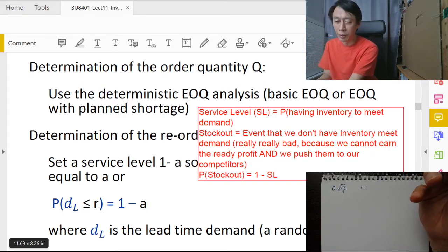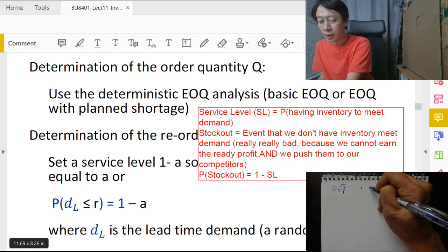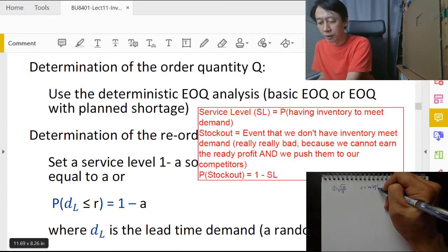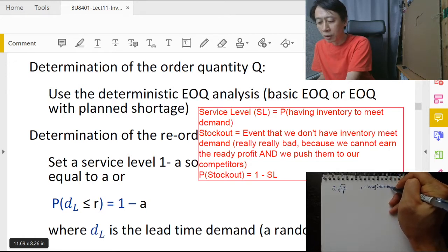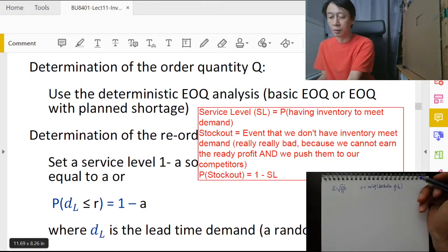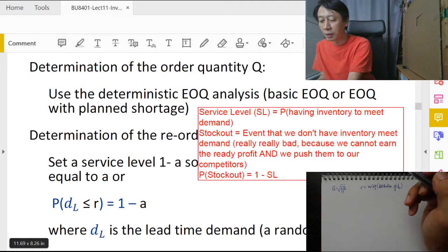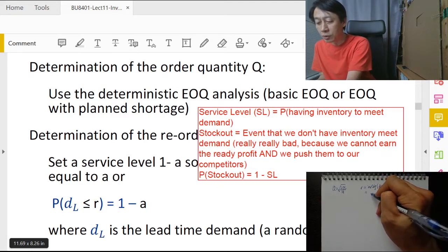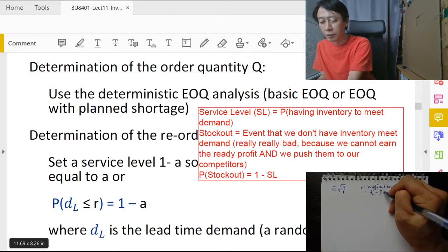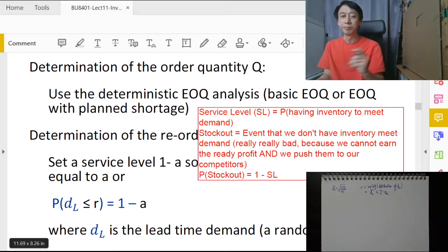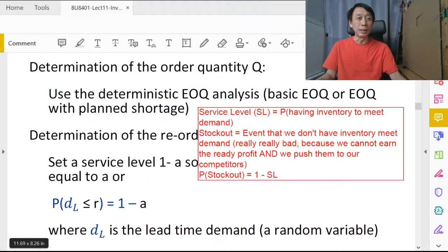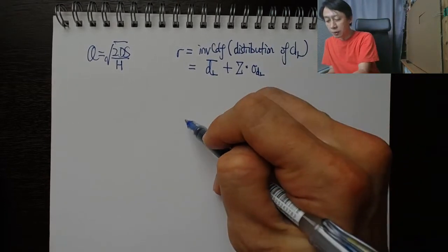So the most general form is the inverse CDF of the distribution of demand during lead time, dL. And if demand during lead time is to follow normal distribution, then we say that is going to be demand during lead time average of it plus the z value times the sigma of demand during lead time.